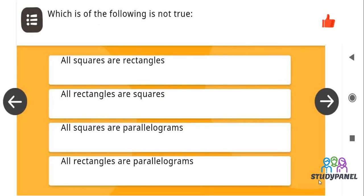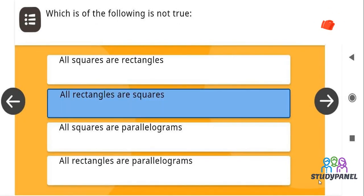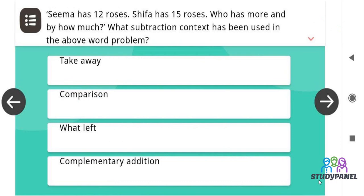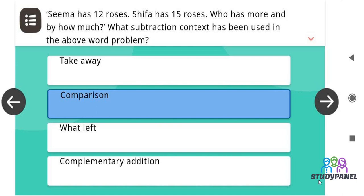Which of the following is not true? The correct answer is all rectangles are squares. Seema has 12 roses, Shifa has 15 roses, who has more and by how much? What subtraction context has been used in the above word problem? The correct answer is comparison.